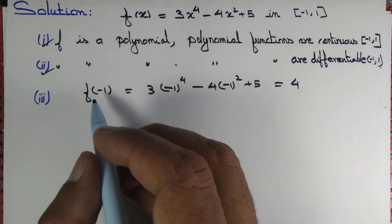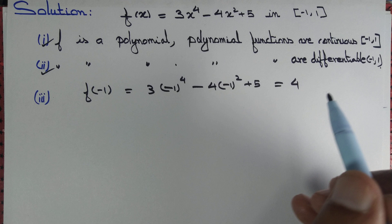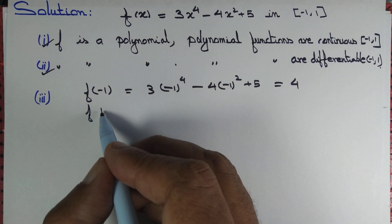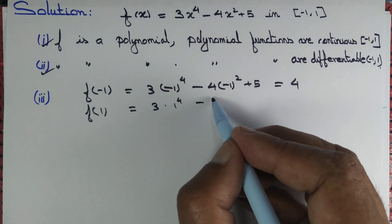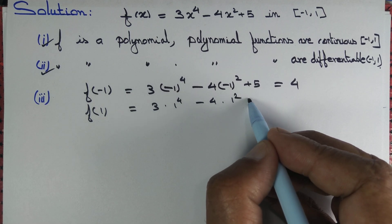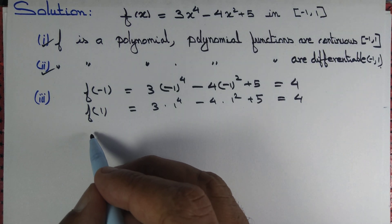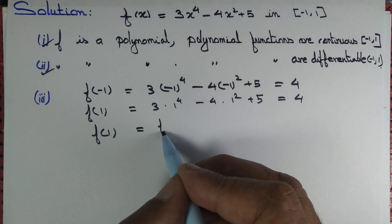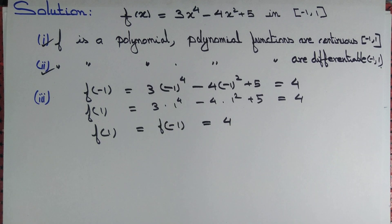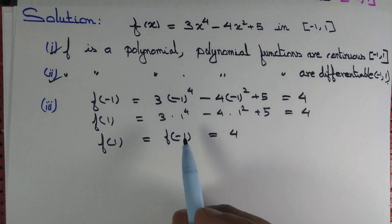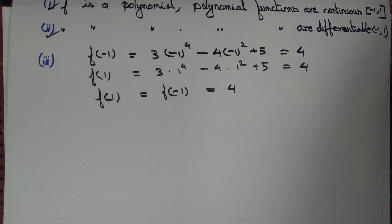Now for f(1): f(1) = 3(1)⁴ - 4(1)² + 5 = 3 - 4 + 5 = 4. So f(-1) = f(1) = 4. The values of the function at the endpoints are the same, so the third criterion is satisfied.